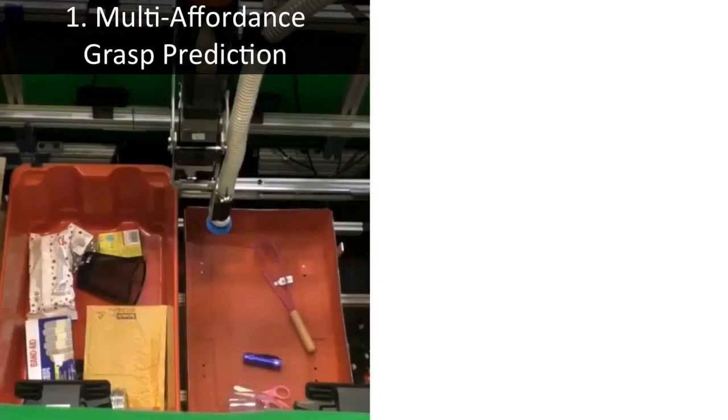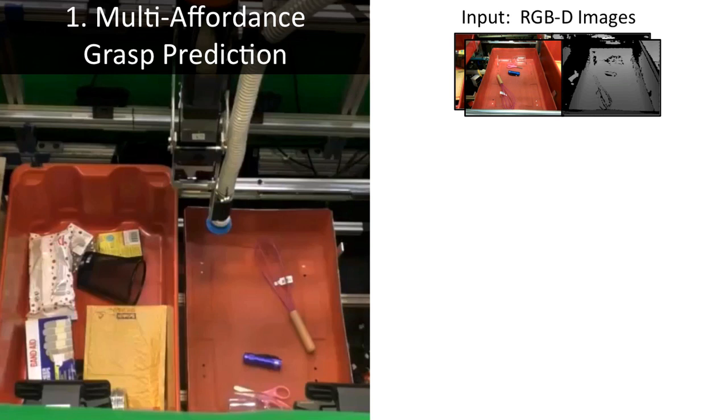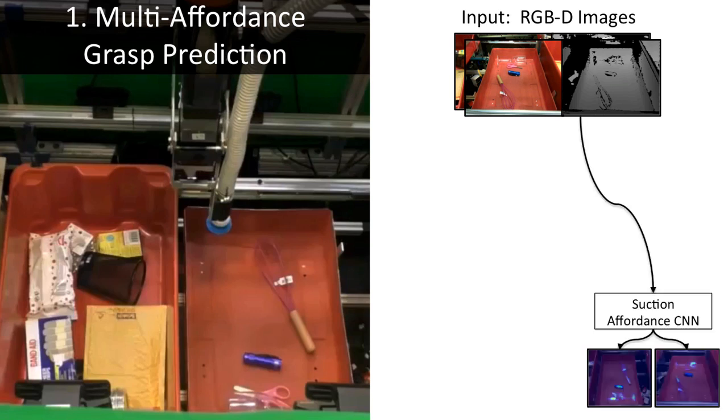The multi-affordance grasp prediction addresses the combined problem of perceiving and planning grasps. More specifically, given RGBD images of the scene as input, the system feeds the images through a fully convolutional neural network to densely predict pixel-level affordance maps, where higher values indicate better regions in the scene for grasping by suction.